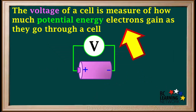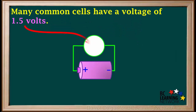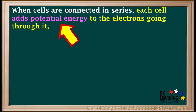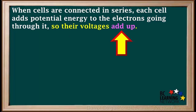The voltage of a cell is a measure of how much potential energy electrons gain as they go through a cell. Many common cells have a voltage of 1.5 volts. When cells are connected in series — positive to negative — each cell adds potential energy to the electrons going through it, so their voltages add up.